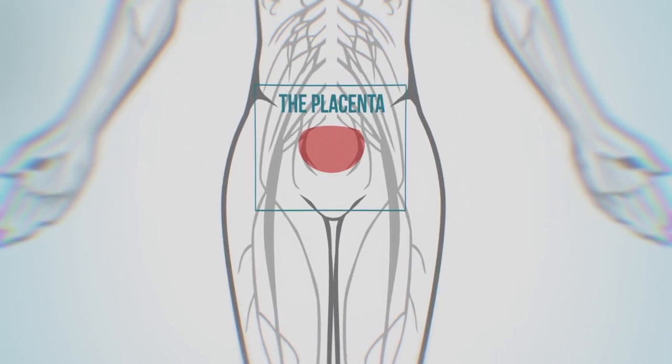The placenta is the tree of life. It is the very first organ to develop when a new life is created, and it's the only organ that the body gets rid of after completing its function. But there's still a lot to be discovered about the placenta.